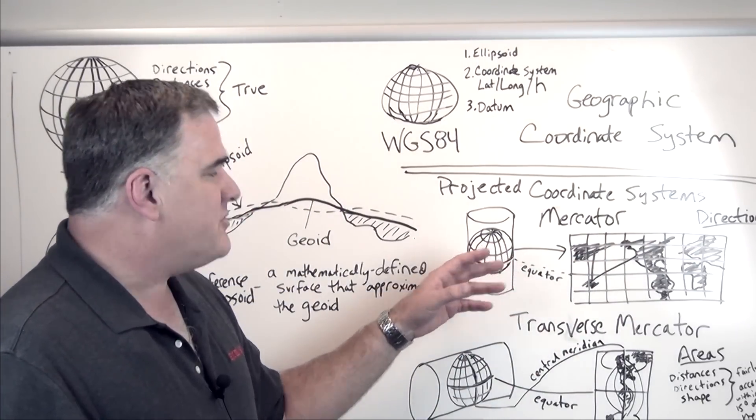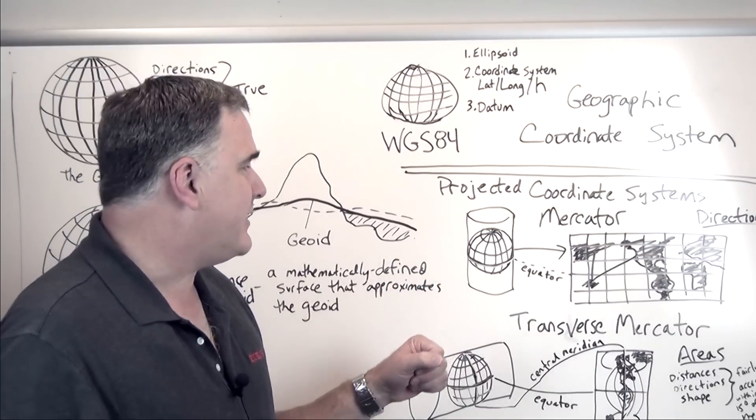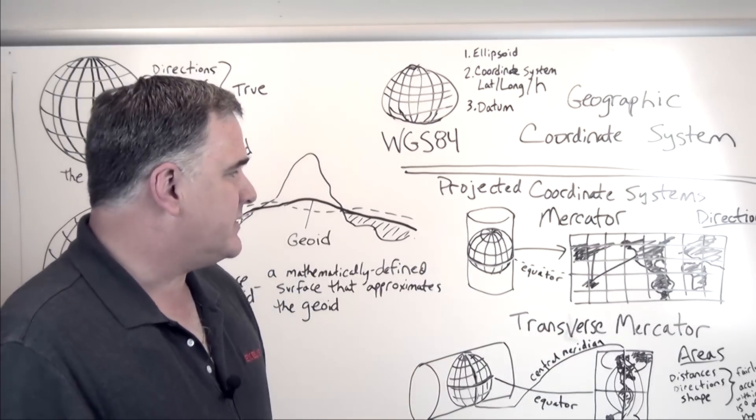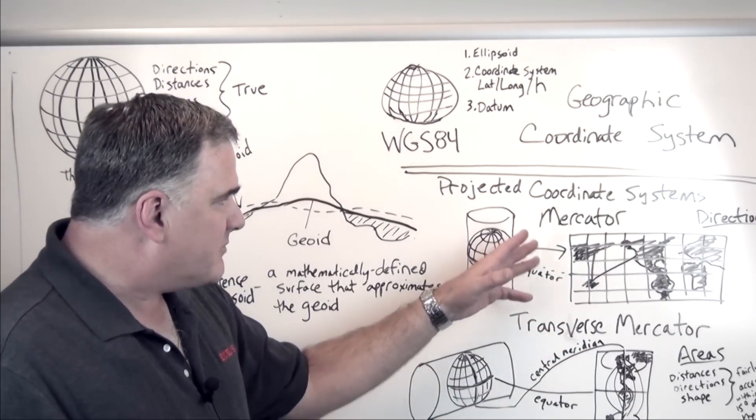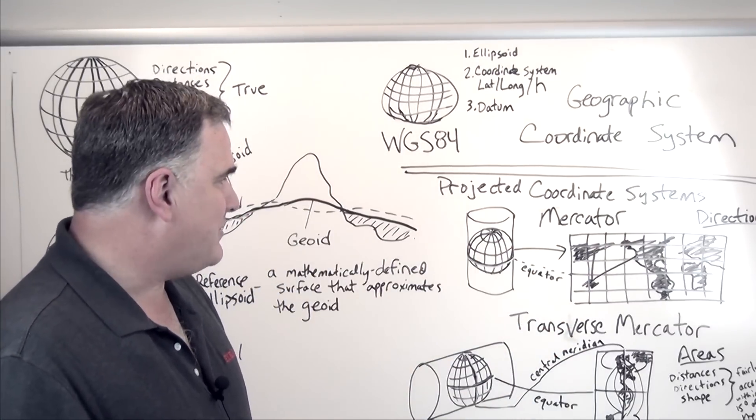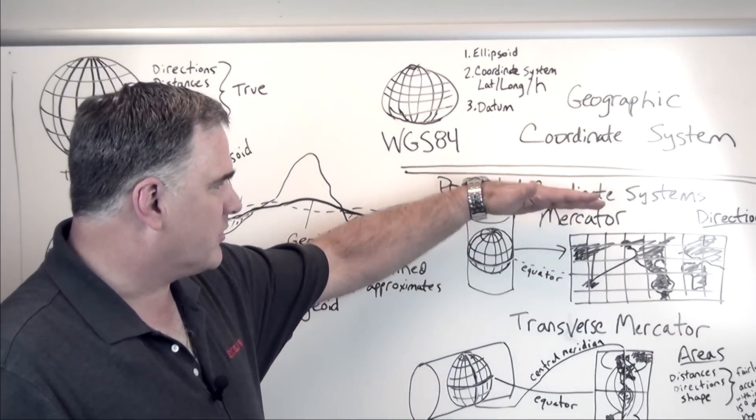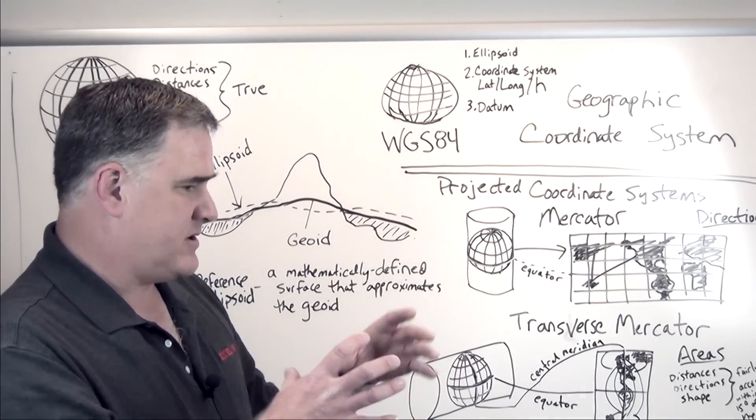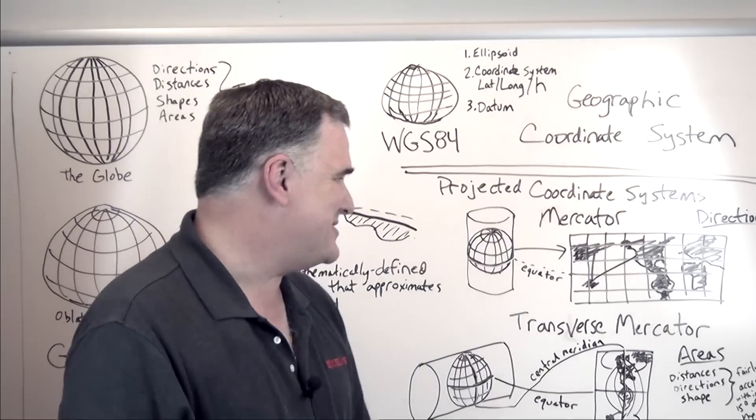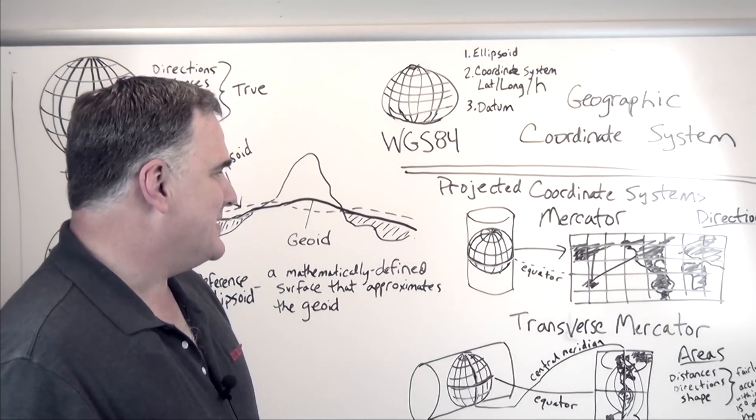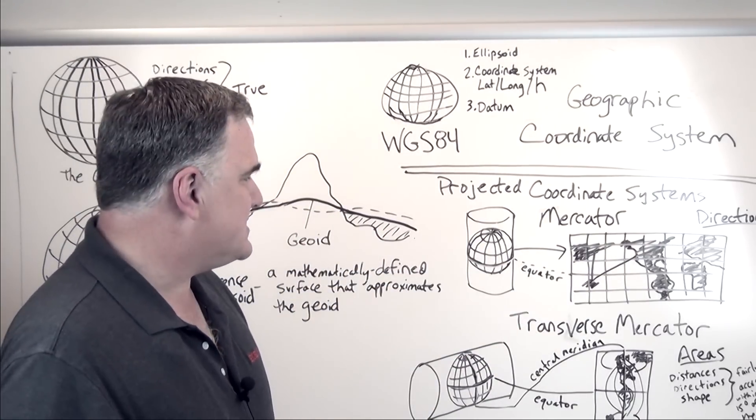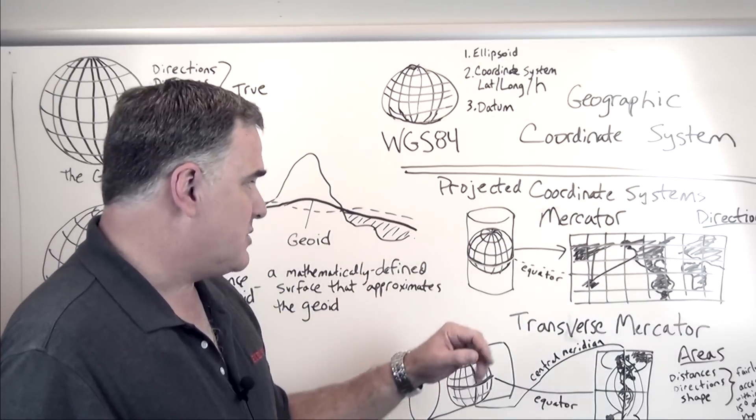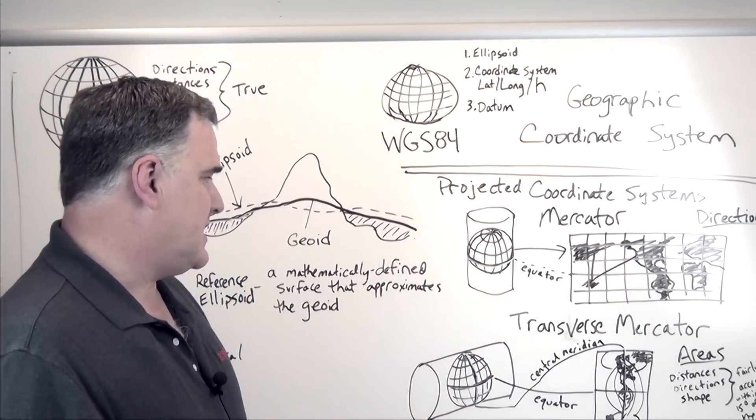Now it does distort other things significantly, area at any significant distance north or south of the equator. So if you've ever looked at a Mercator world map, you'll notice that the polar regions high up in the north and way down in the south, they grow very large. They're huge. So it's not a great map for a lot of other purposes other than navigation, but because directions or bearings are preserved, it is highly useful.